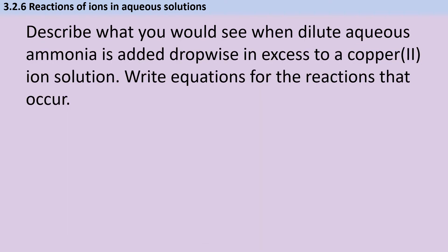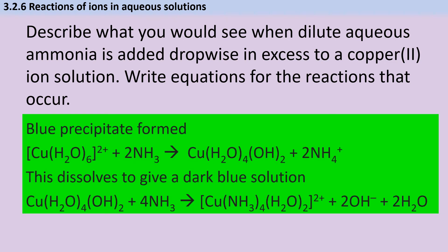Exam question: Describe what you would see when dilute aqueous ammonia is added dropwise in excess to a copper(II) ion solution, and write equations for the reactions that occur. First, a blue precipitate forms as ammonia accepts hydrogen ions, generating hydroxide ions that substitute two water molecules. Then the precipitate dissolves with excess ammonia to give a dark blue solution, showing the partial substitution with release of two hydroxide ions and two water molecules.